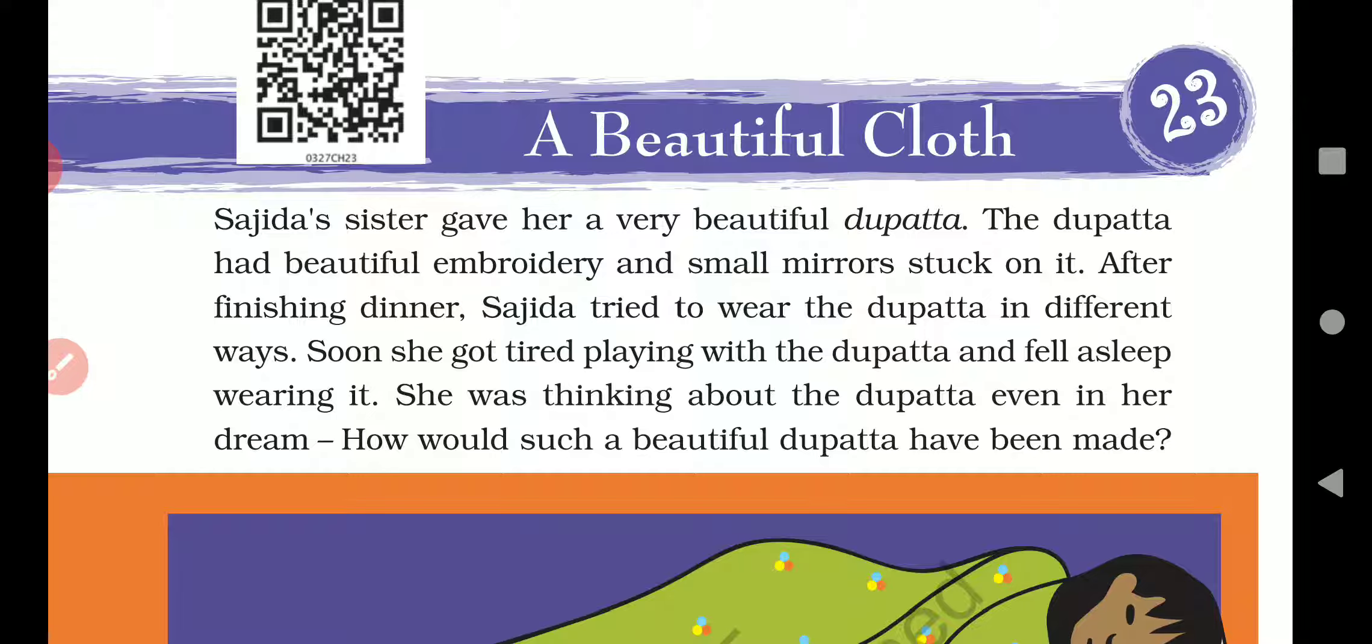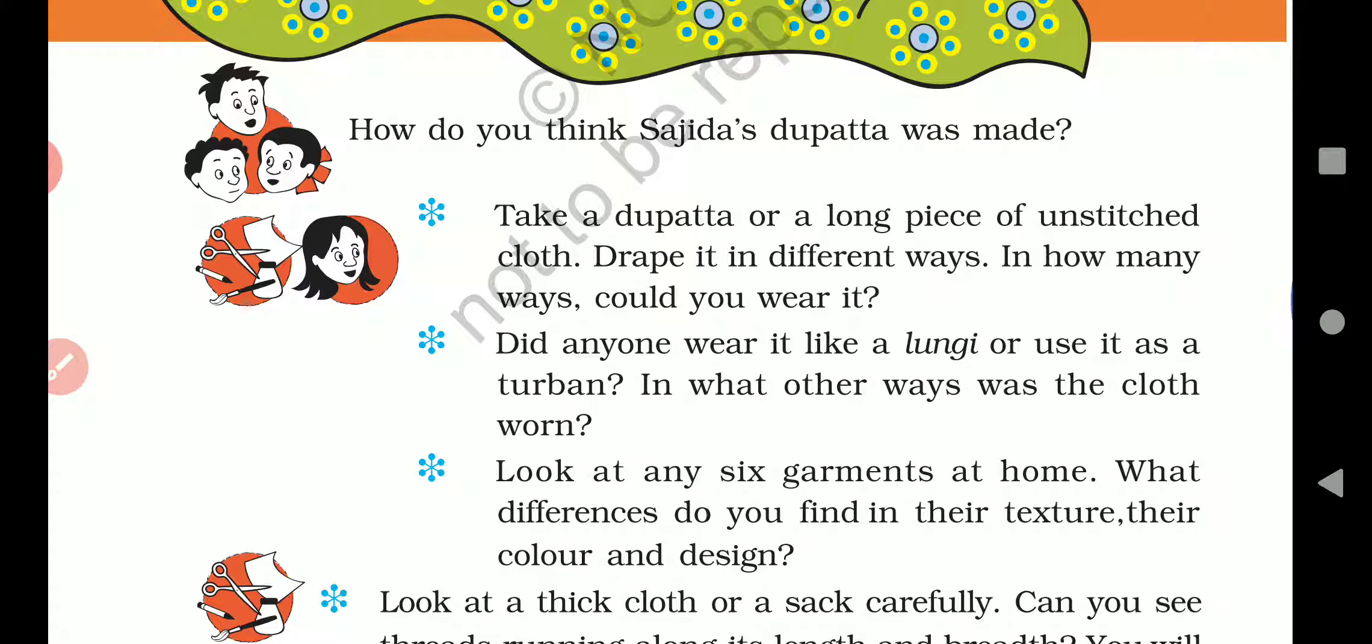She got very tired and fell asleep there wearing the dupatta. She was thinking about the dupatta even in her dream. When Sajida was sleeping, she was thinking about that dupatta in her dream. What was she thinking? How would such a beautiful dupatta have been made? How was such a beautiful dupatta made?